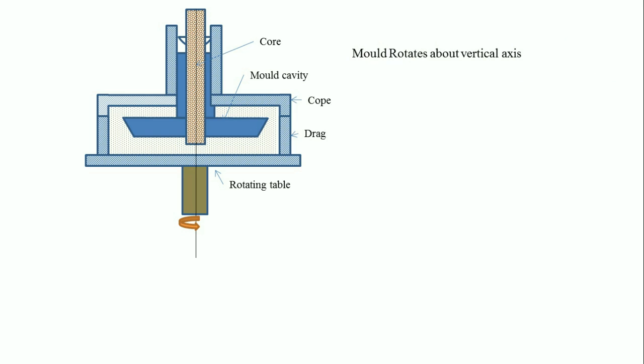The mold rotates about the vertical axis and it rotates at a lower speed when compared to the true centrifugal casting process. In this case 180 meters per minute speed is used for the casting process.